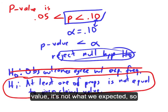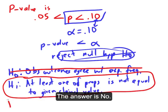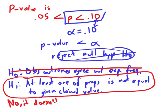So our conclusion here is going to be that since at least one of the proportions is not equal to the given claimed value, it's not what we expected. So for the question that they asked, does the slot machine appear to be functioning as expected? The answer is no, it doesn't appear to be functioning as expected.